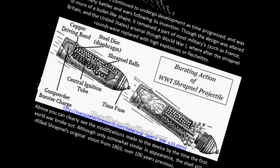The shrapnel shell continued to undergo development as time progressed and was used in many battles and wars following its invention. Though the design was altered to more of a bullet-like shape, it remained part of most militaries such as France, Britain, and the United States' arsenal through World War I, whereafter, the shrapnel rounds were replaced with high explosives or flechettes. Above, you can clearly see the modifications made to the device by the time the First World War broke out. Although only somewhat similar in appearance, the shell still fulfilled shrapnel's original vision from 1803 over 100 years previous.